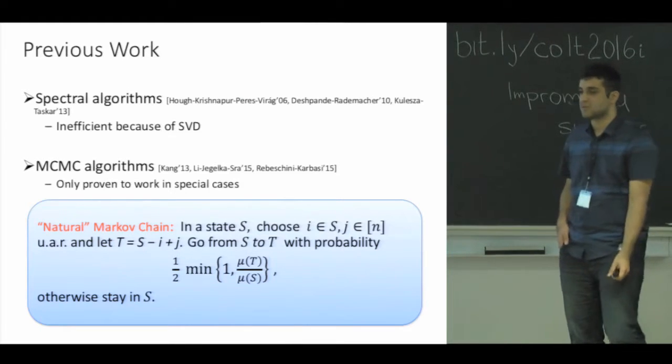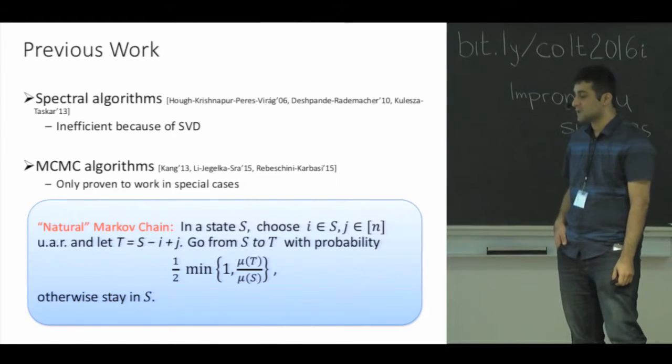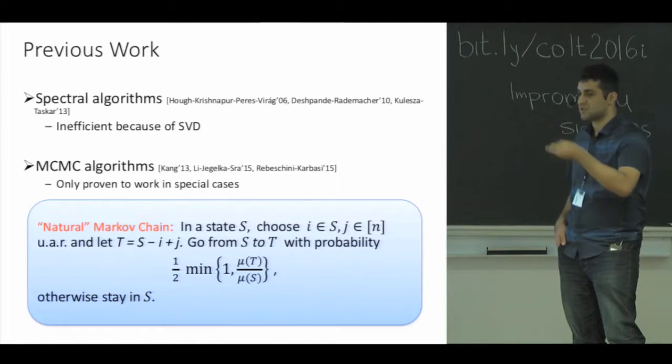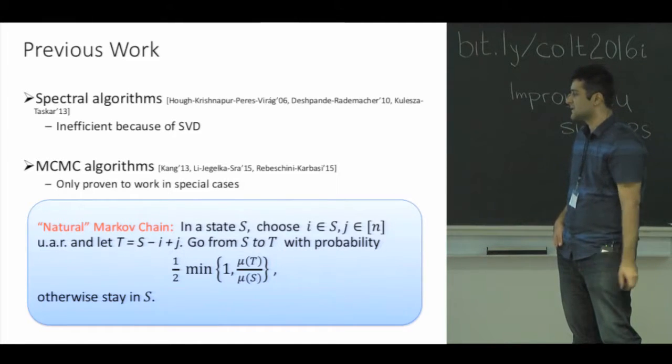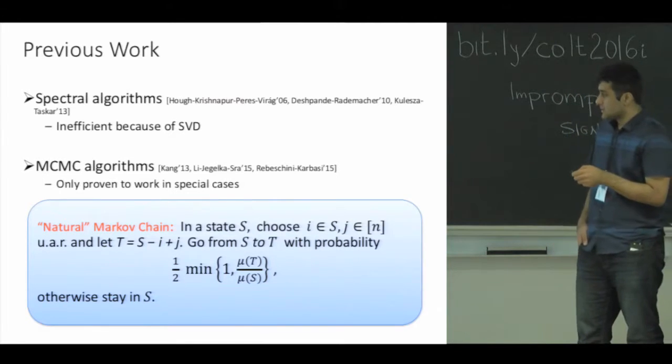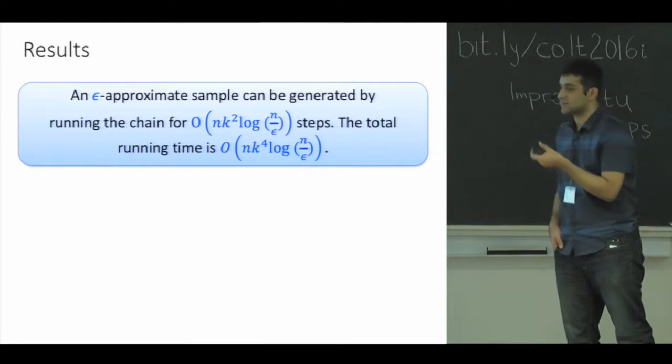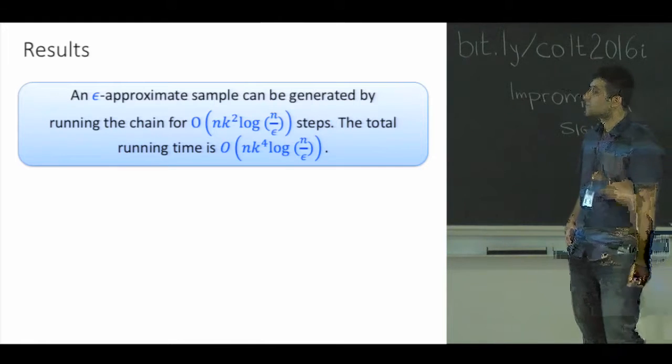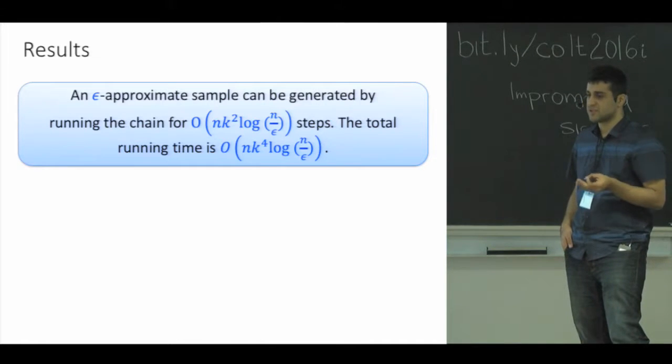If the value of μ, our k-DPP, is larger at the new subset, you go there with probability half. Otherwise, you go there with probability half times the ratio of the value of μ at these two states. With the rest of the probability, you just stay at S.